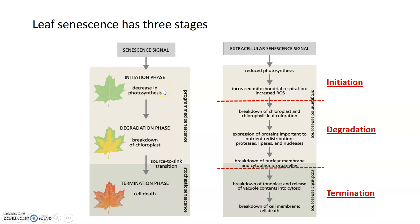The basic hallmarks of these stages can be seen on the left, more at the macro level. A senescence signal is received, then in the initiation phase photosynthesis decreases. Following that, the degradation phase begins and chloroplasts start to break down. These two phases are part of programmed senescence. Then breakdown of chloroplasts triggers entry into the termination phase, where stochastic senescence takes over and random degeneration starts, ultimately leading to cell death.